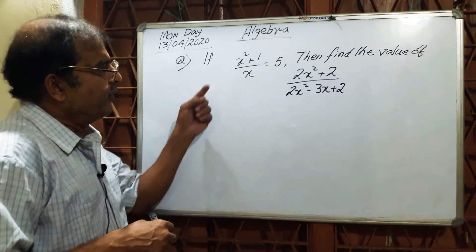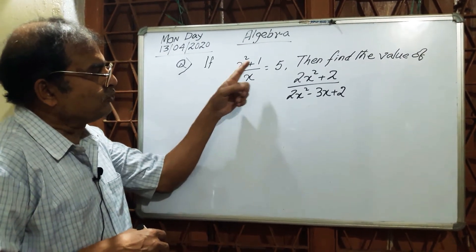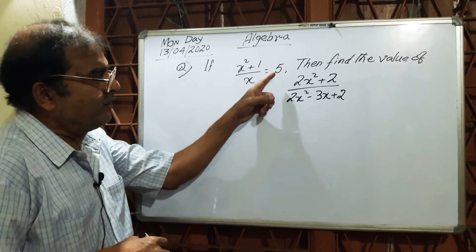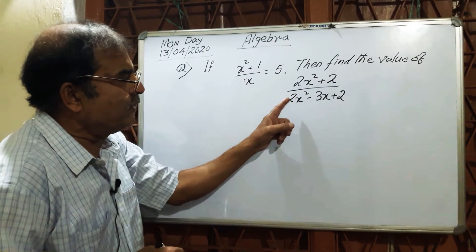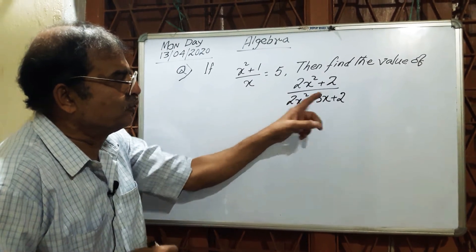Good evening. The given is x² + 1/x = 5. Then find the value of (2x² + 2)/(2x² - 3x + 2).